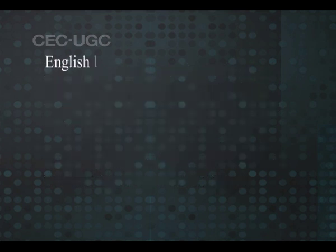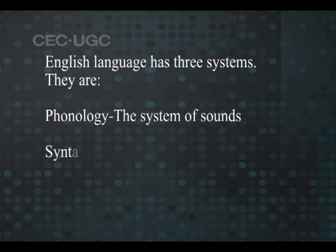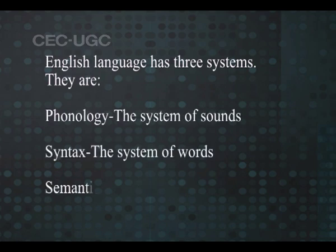English language has three systems: phonology — the system of sounds; syntax — the system of words; and semantics — the system of meanings.